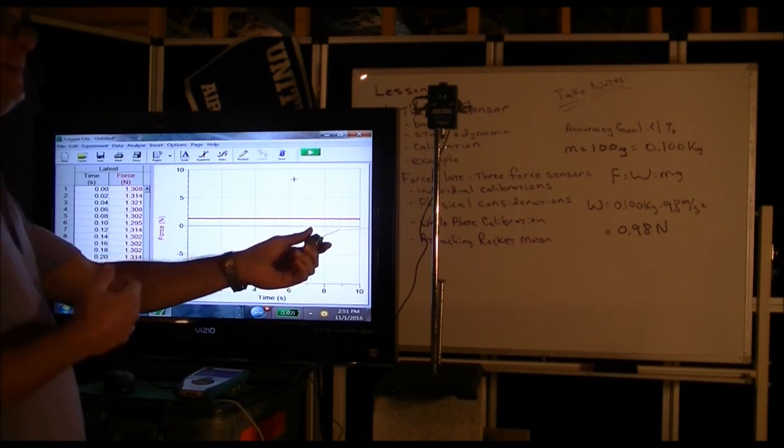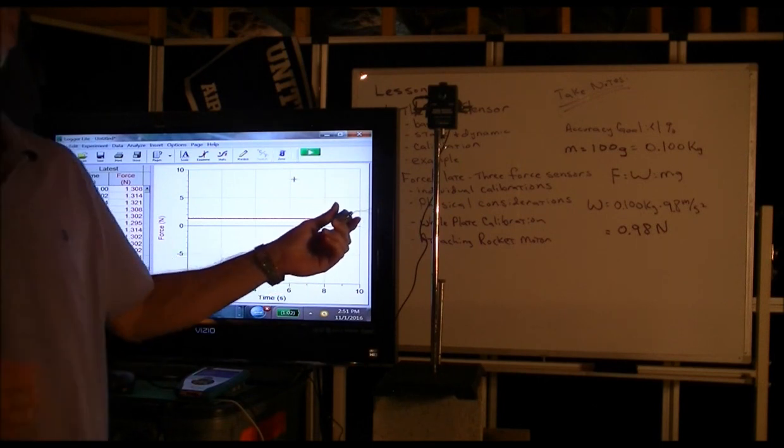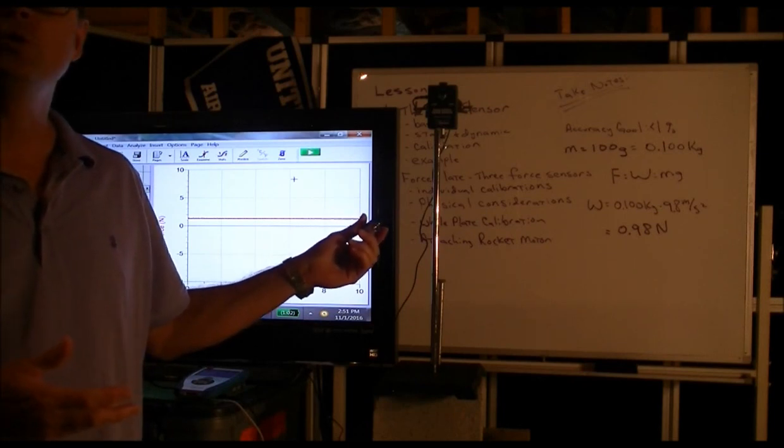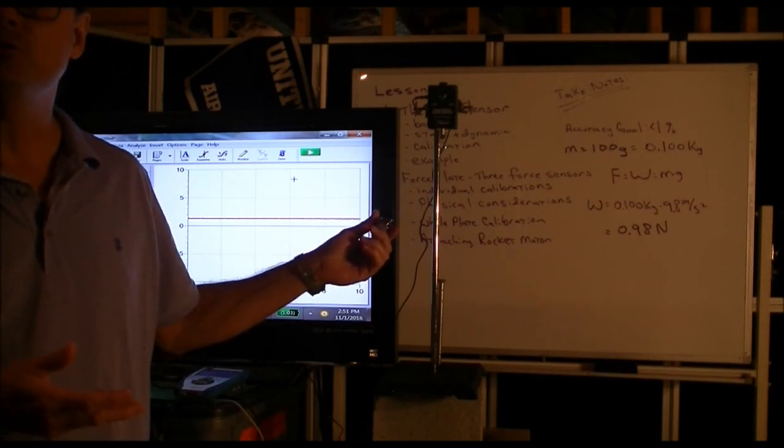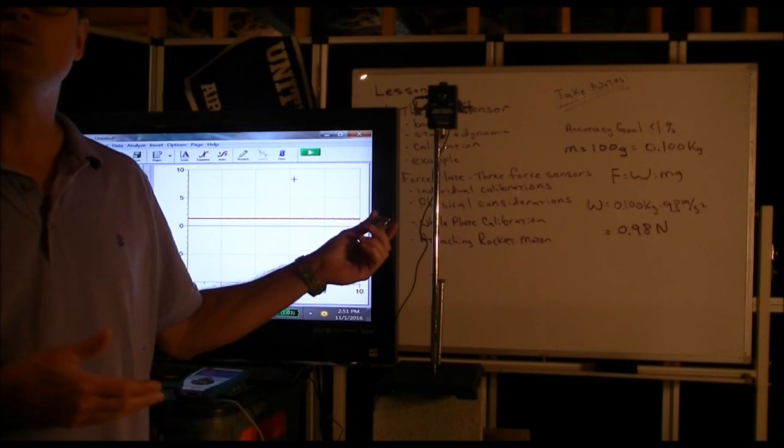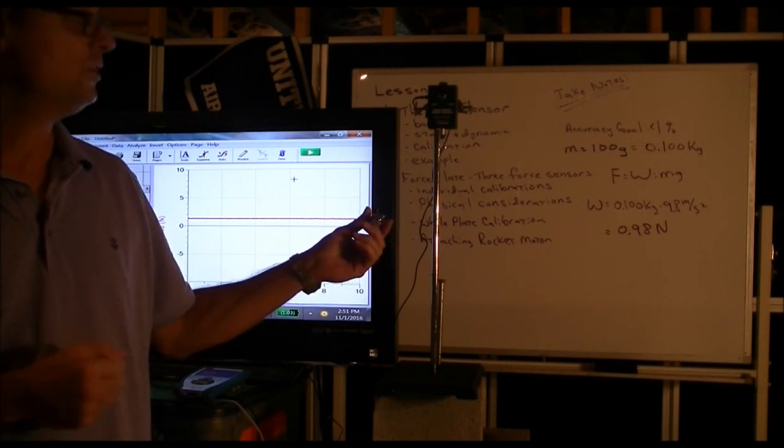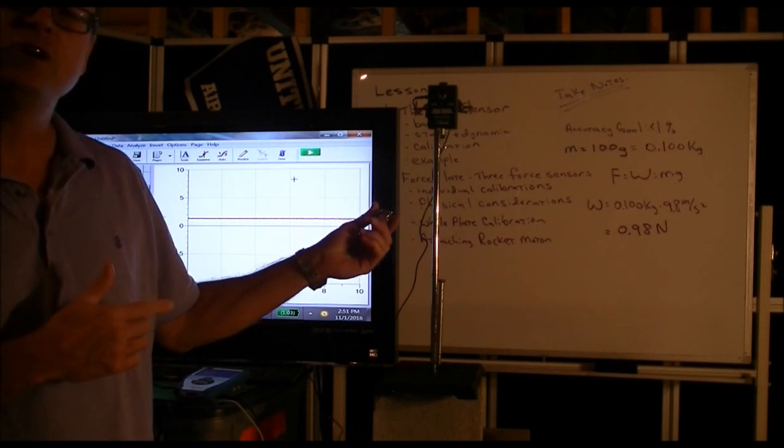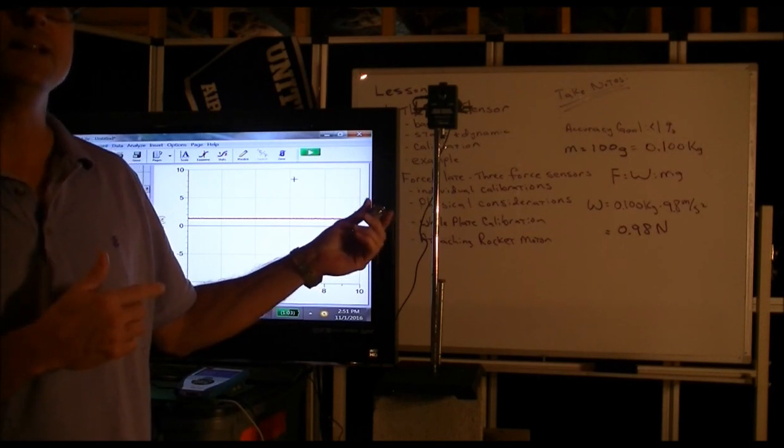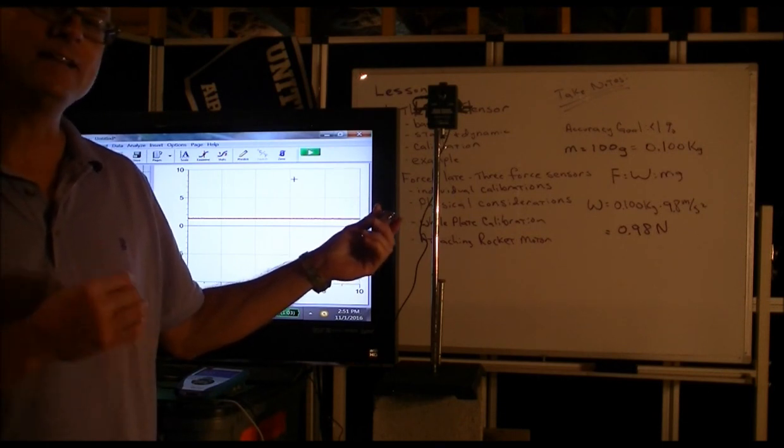So essentially, it's like if you were going to weigh some produce, but you were weighing the produce in a tray, you'd want to subtract the weight of the tray that the produce was in. So you're really only measuring the weight of the produce.